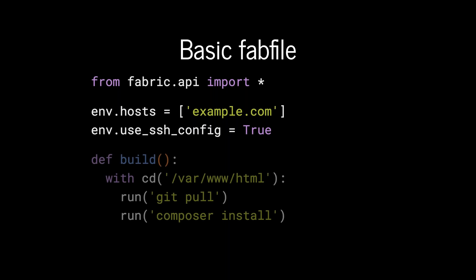Then we can start defining tasks. We use 'def' and then the name of the task — in this case, 'build' — with optional parameters. These commands are run remotely over SSH. This is our bread and butter PHP application: we're cd-ing into a directory, running git pull, and then running composer install on the remote server. Once you've got the fab file built, we can run tasks using the fab command and then specify the name of the task, which was 'build'.